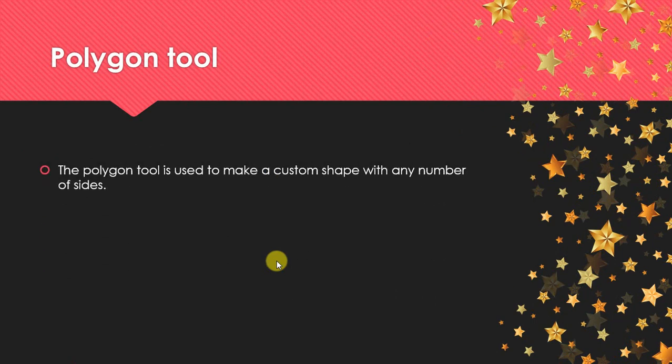Polygon tool: The polygon tool is used to make a custom shape with any number of sides. It creates a non-specific number of sides in your drawing. You can draw any number of sides — you decide the number of sides yourself.